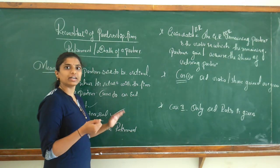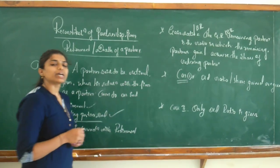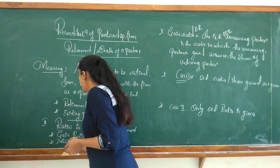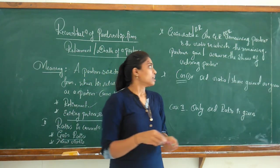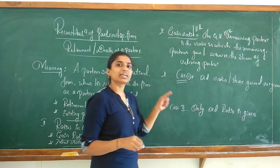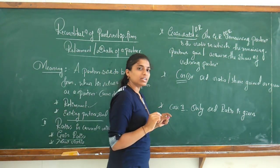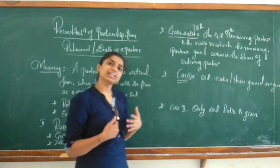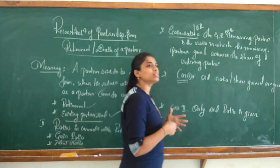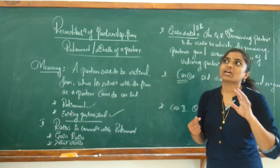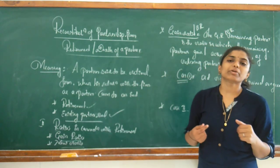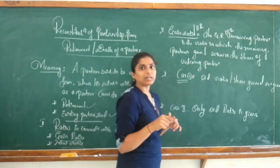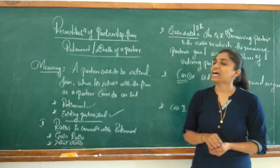In connection with retirement, we need to find the gain ratio. The existing partners, also called remaining partners or old partners, acquire the share of the retiring partner. The share acquired by the remaining partners from the retiring partner is called the gain ratio.